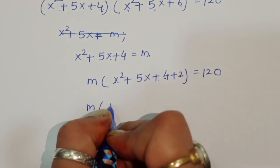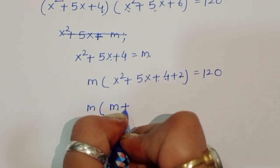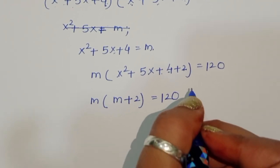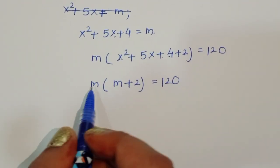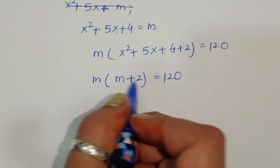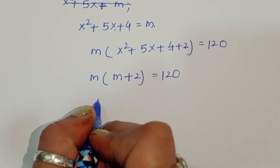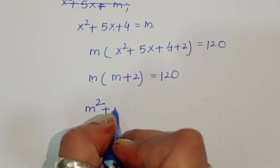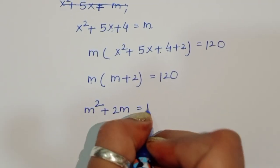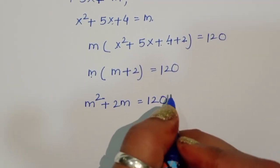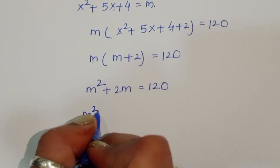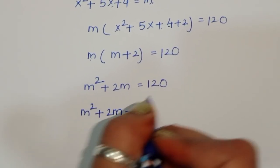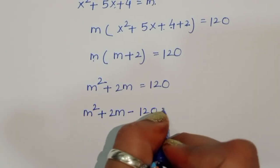So m(m + 2) = 120. Expanding: m² + 2m = 120, therefore m² + 2m - 120 = 0.